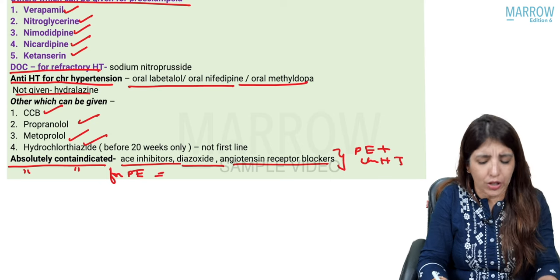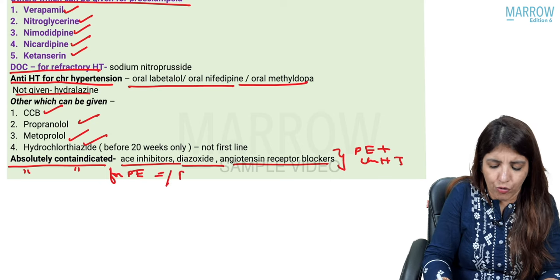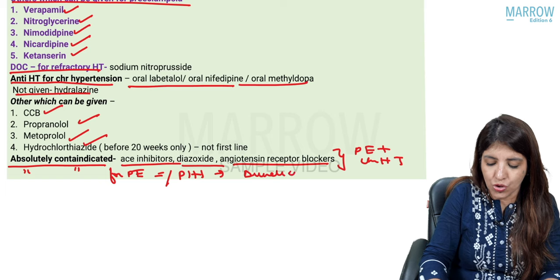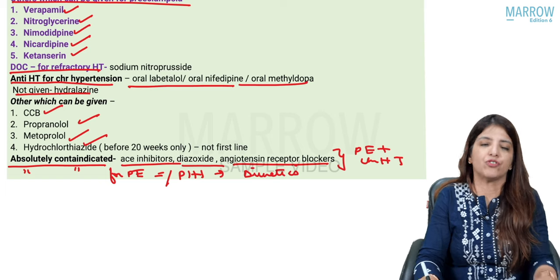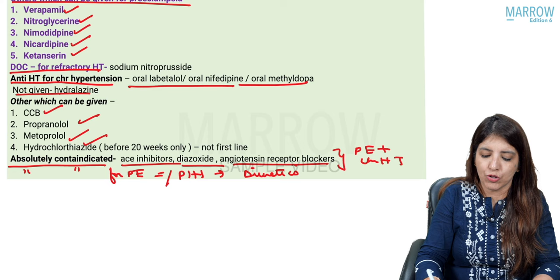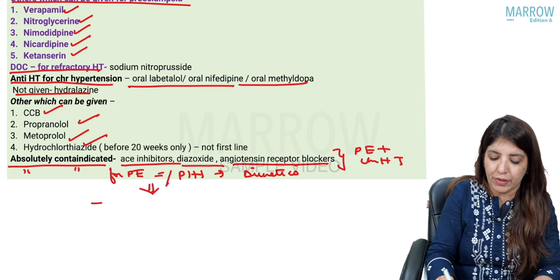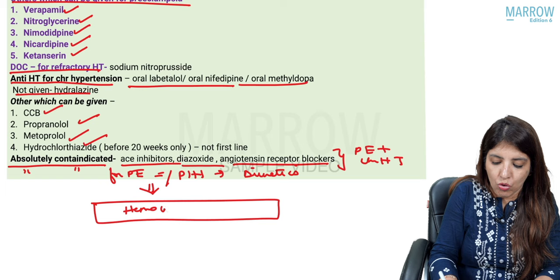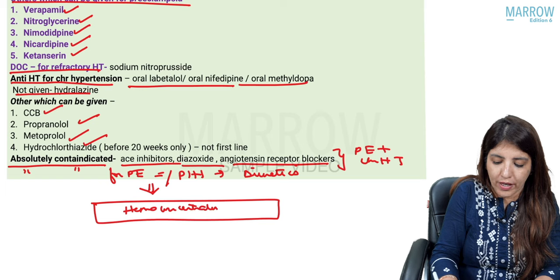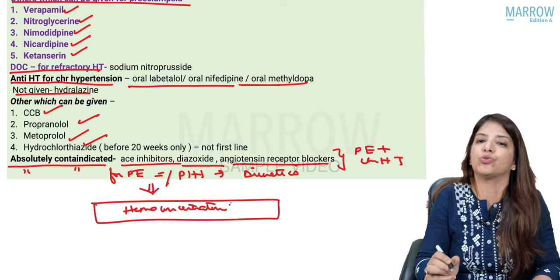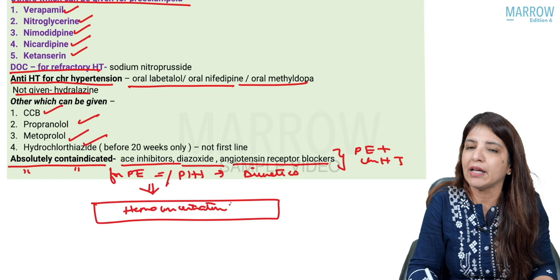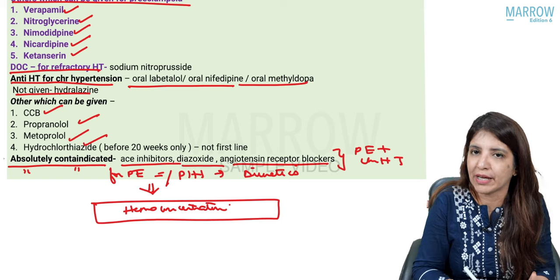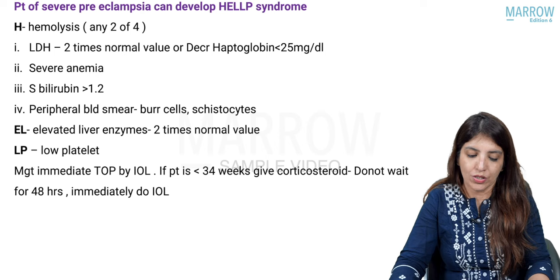Diuretics are absolutely contraindicated in a patient of preeclampsia or PIH because in preeclampsia there is hemoconcentration. Normally in pregnancy there is hemodilution, but in preeclampsia there is hemoconcentration, so you should never give diuretics.